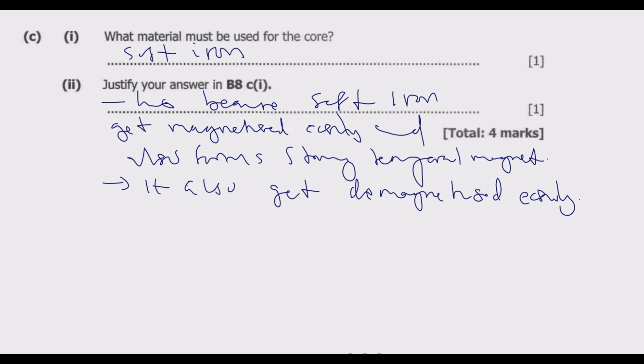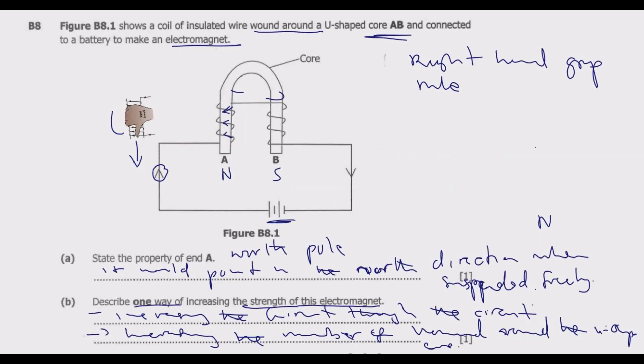What you notice in this case is that once the current starts flowing, once you close the switch, this coil easily gets magnetized as long as the current is flowing. Once the current stops flowing, this coil will lose its magnetism. So this is the best material for a temporary magnet. This is how you answer question 8.